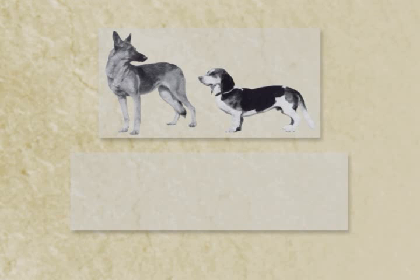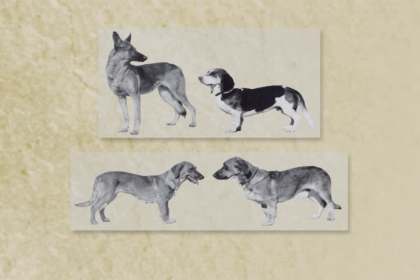Let's look at some of these crosses. It's a cross that Stockard set up between the German Shepherd and the Basset Hound. The German Shepherd has long legs, Basset Hounds have short legs. The F1 hybrids of this cross also have short legs. That suggests that there may be a dominant factor in the Basset breed that causes short leg length.